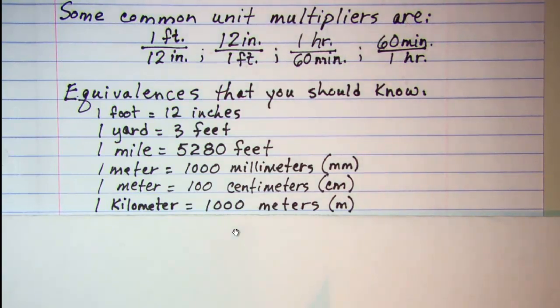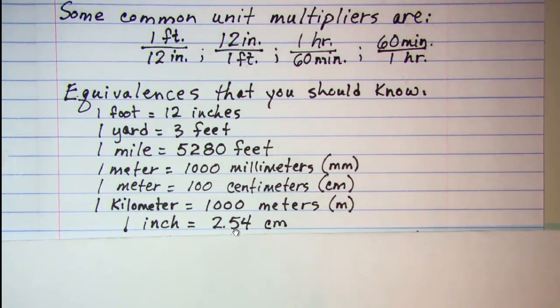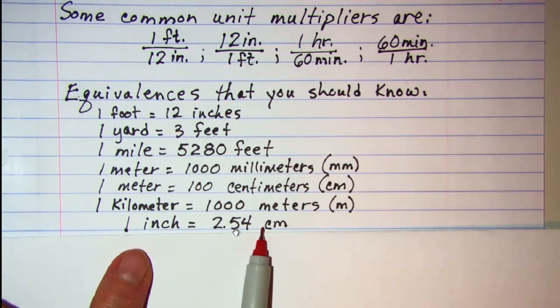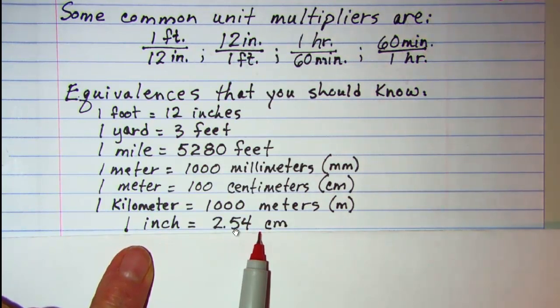Now some equivalences that may be new to you which you need to learn: one inch is equivalent to 2.54 centimeters. So we can again since we have this equivalence, one inch equals 2.54 centimeters.